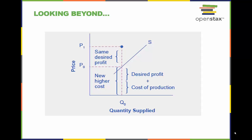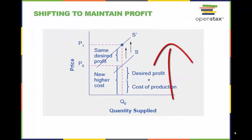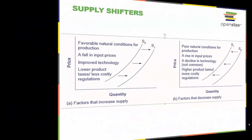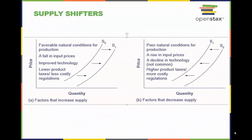If the cost of production increases, the price for the product will also need to increase to maintain the desired profit level of the firm. When the cost of production increases, the supply curve shifts upward to a new price level in order to maintain the desired profit of the firm. Here are two lists of factors that either increase or decrease supply. These factors include natural conditions, input prices, technology, and taxes and regulation.